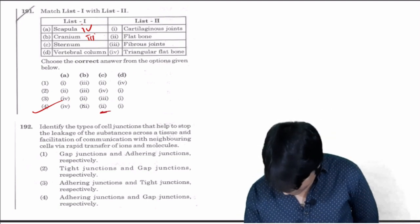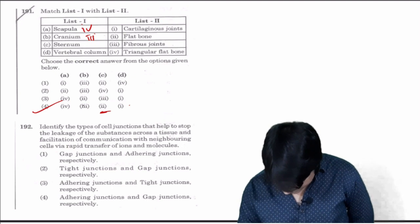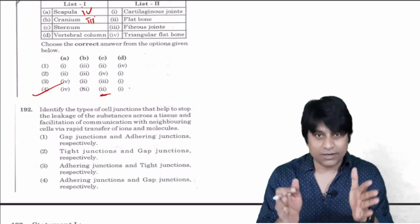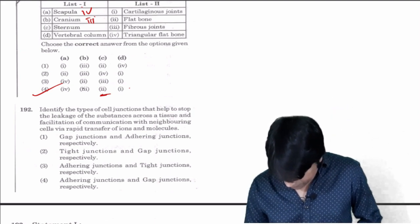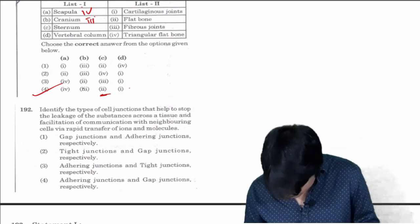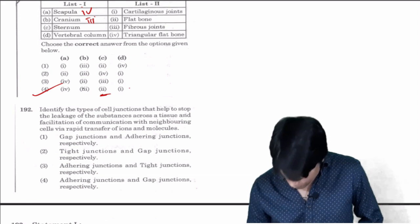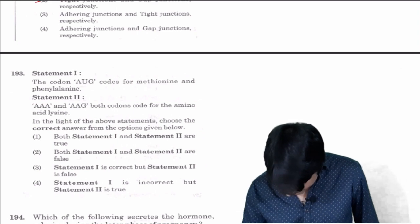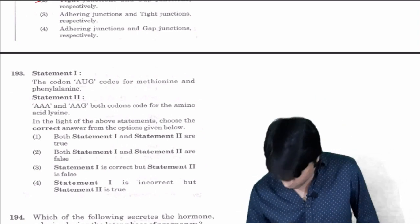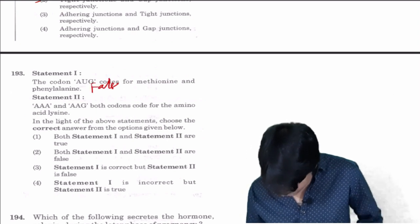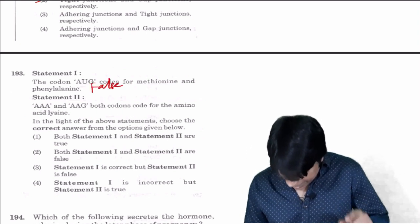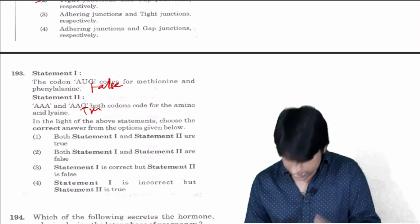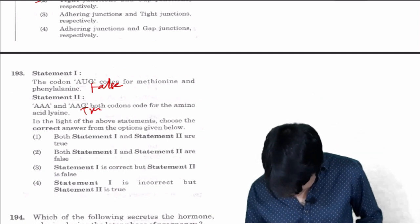Identify the cell junction that helps to stop the leakage. The one which is stopping the leakage is called tight junction and for communication with the neighboring is gap junction. So tight junction and gap junctions respectively, 192 is two. AUG codes for methionine and phenylalanine, this is wrong, this is false statement. AAA and AAG both codons code for amino acid lysine, this is true. Statement one is incorrect but statement two is true. Your answer for 193 is four.